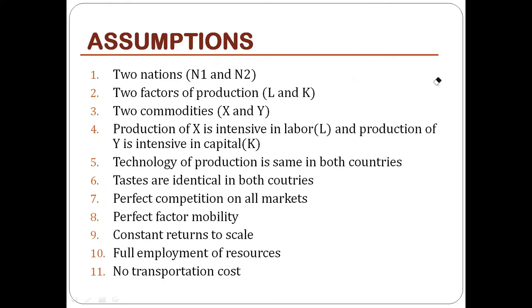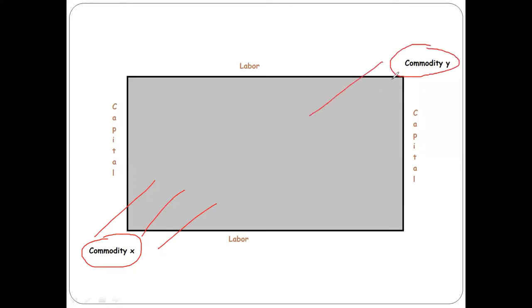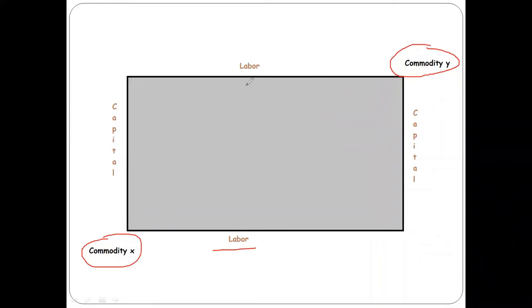We will now understand the Stolper-Samuelson theorem using an Edgeworth box. In this rectangular Edgeworth box, the lower-left corner represents commodity X and the upper-right corner represents commodity Y. On the X-axis we have labor and on the Y-axis we have capital.